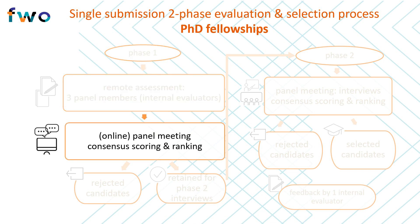The next step in the process involves selecting a subset of the candidates to be interviewed. Before the panel convenes, the FWO provides an overview of all the scores given by the reviewers and their average. A preliminary ranking of the candidates in the panel based on the average scores is also provided. This information forms the basis for the discussion during the pre-selection meeting. During an online meeting the candidates are discussed one by one and a final selection is made of the candidates who will proceed to the next step of the evaluation process. During this meeting the panel may adjust the scores they give to a candidate based on scientific arguments.